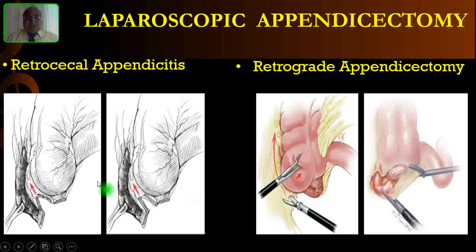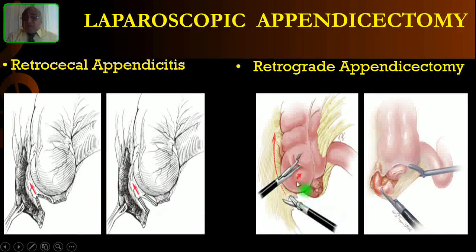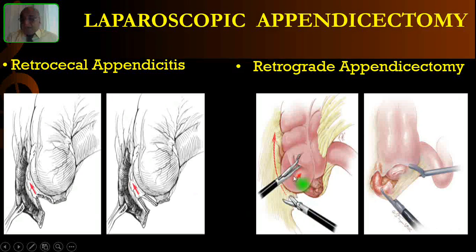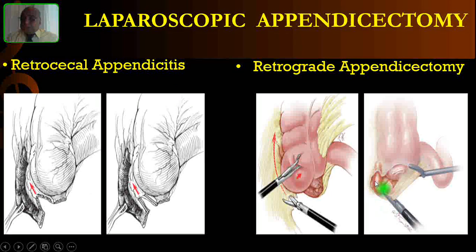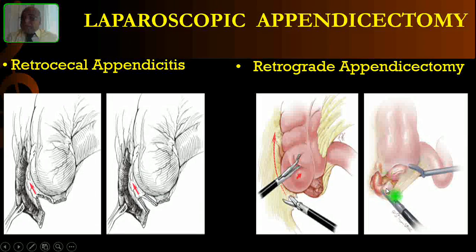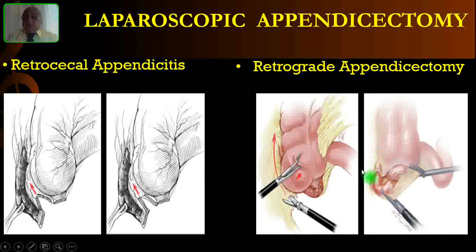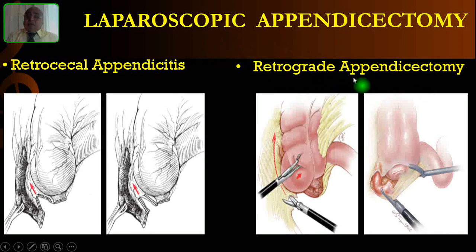If the appendix is retrocecal, hold the cecum with a Babcock forceps and retract it medially. Then make a cut in the embryological line of fusion — that is the white line of Toldt — and mobilize the cecum medially so the appendix comes into view. Then cut the appendix at the base first, slowly mobilize and cut the meso-appendix bit by bit until reaching the tip. This technique is called retrograde appendicectomy and can also be performed laparoscopically.